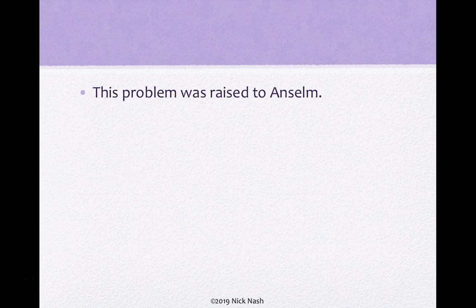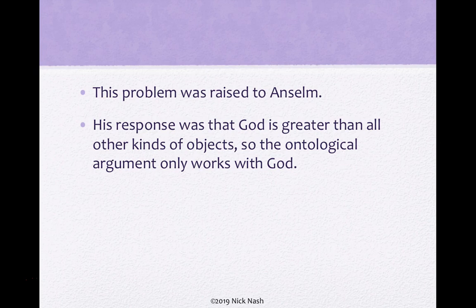To be fair to Anselm, this problem was raised to him. His response — to put it a little bit too simply — was to say that God is greater than all of the other kinds of objects in a way, so that the ontological argument only works with God. It doesn't work with Big Macs or anything else we could imagine of which something greater could be thought. There is an intuitive sense in which we could understand what it means to say that God is actually greater than all of these kinds of objects like Big Macs, and so maybe the ontological argument works only for God and not for regular objects. But I'll leave it to you to decide if this is a good response to this objection.